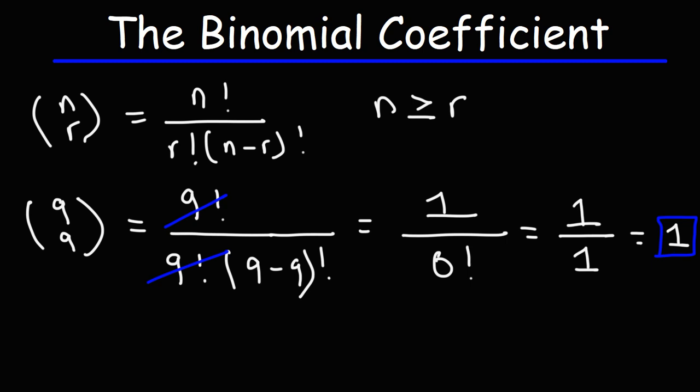So as a shortcut, just remember, if n and r, if they're identical, it's going to equal 1. Or if r is 0, you're going to get 1 as well.